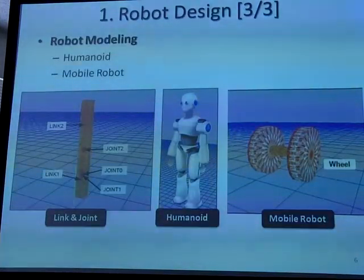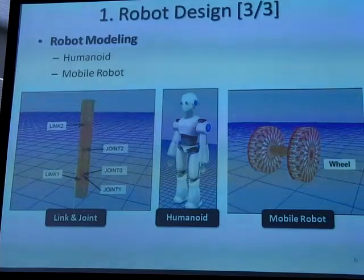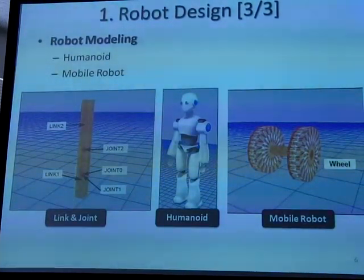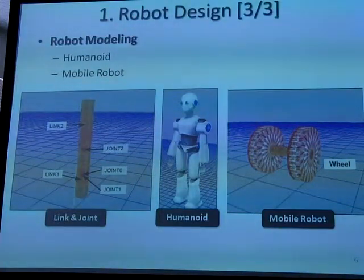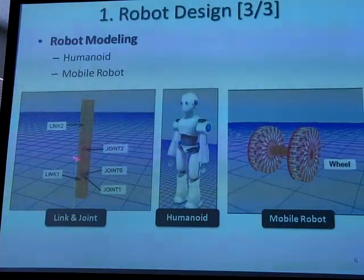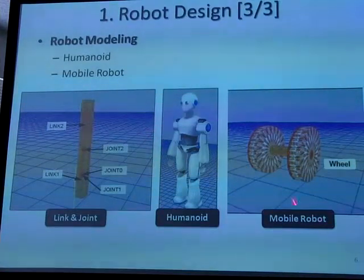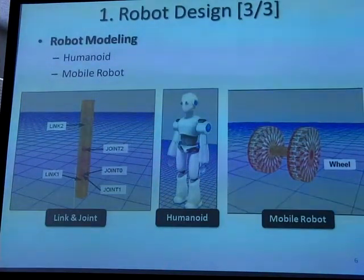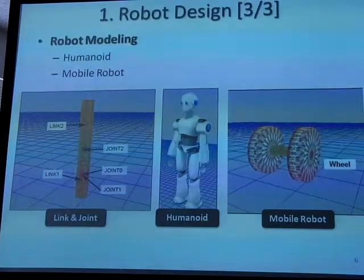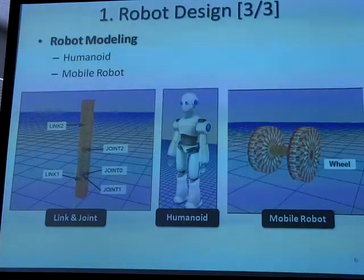We follow the HNN specification and have the link action model — this is very similar to OpenHRP — and we have a humanoid that is compatible with OpenHRP. With the same approach, we can also model mobile robots. So a wide range from humanoids to mobile robots can be modeled in SigVersch.